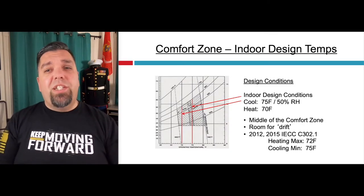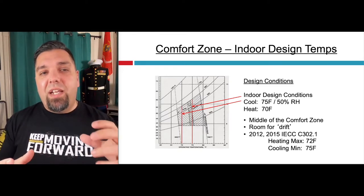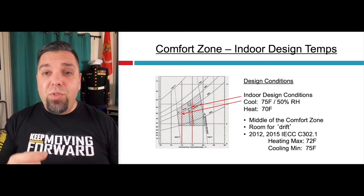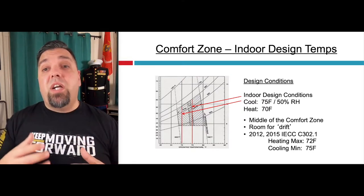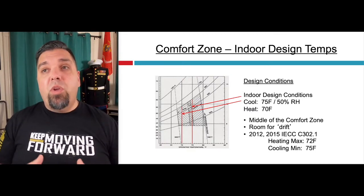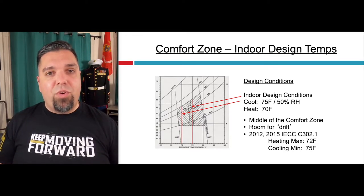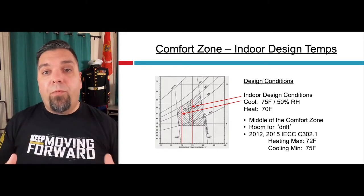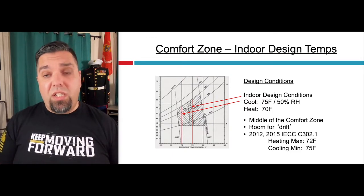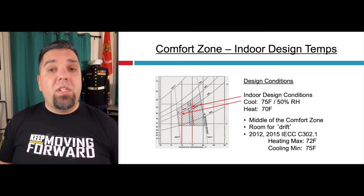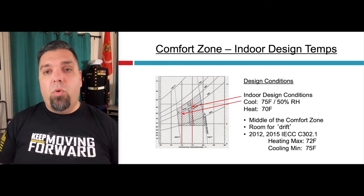Let's talk about indoor design temperatures. It's really important in the sales process that salespeople are setting realistic expectations with the homeowner using the design temperatures required by code in ACCA Manual J. What is considered comfortable varies by person, but you have to set realistic expectations. If we're designing around 75 degrees and 50% relative humidity in cooling but the homeowner wants 63 degrees, that's unrealistic. If you don't explain upfront what you designed to and why, they may have unrealistic expectations and call you when the system doesn't hit 63 degrees.